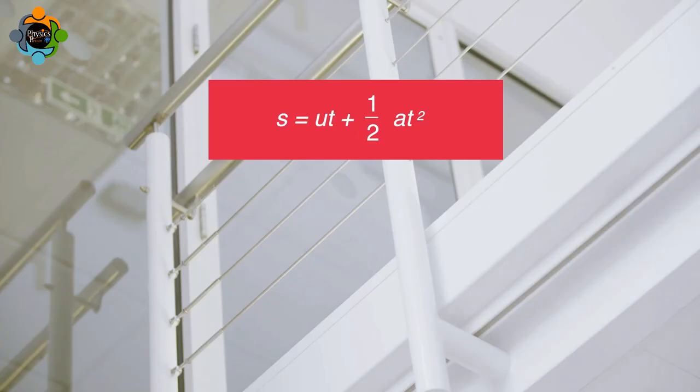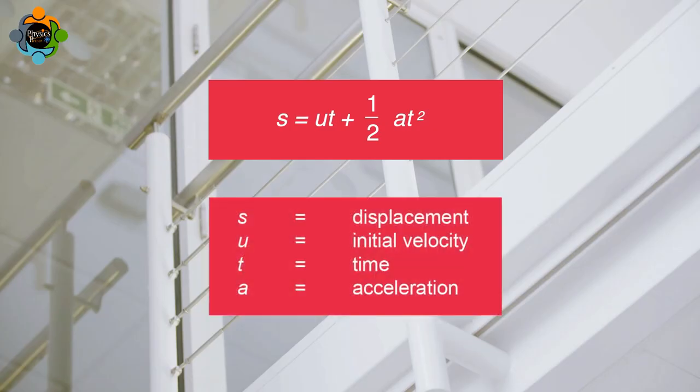The displacement of the ball and the time taken to fall are both known. It is therefore possible to calculate a value for the acceleration of free fall using the equation s = ut + 1/2 at².